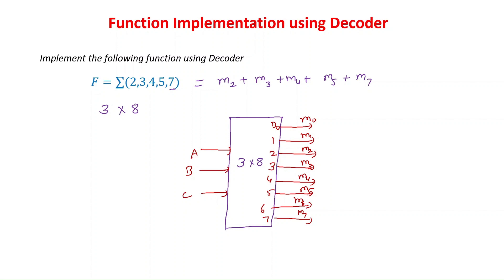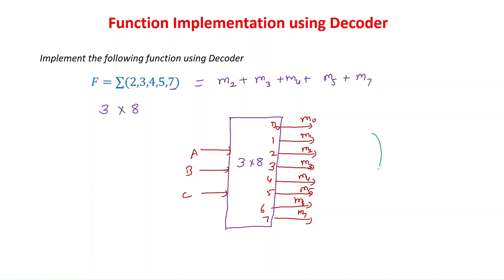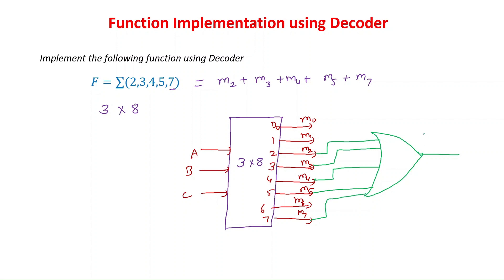The final output is the sum of all the given min terms — those are min terms 2, 3, 4, 5, and 7. We will use one OR gate. The inputs of this OR gate are the given sum of min terms: min term 2, min term 3, min term 4, min term 5, and min term 7. This is the function output for the given expression implemented using the decoder.